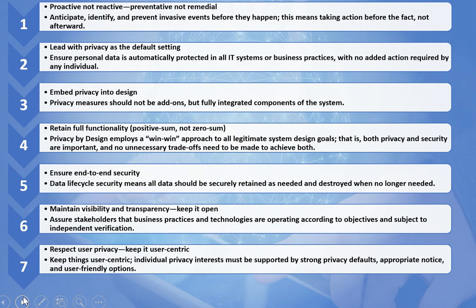The second principle is Privacy as the Default Setting. Default privacy features need to be provided in IT systems and applications to ensure personal data is automatically protected with no added actions required by any individual. For example, Facebook should implement various default features within their application to protect individual privacy, since social media platforms collect lots of personal information.